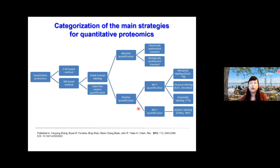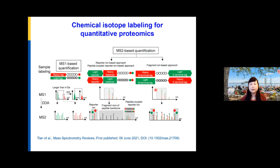Within mass spec-based approaches, there are label-free relative quantification and stable isotope labeling strategies, which can be further divided into absolute and relative quantification. We can also divide these into MS1-based quantification and MS2-based quantification. A recent review from Mass Spectrometry Reviews summarized these chemical isotope labeling strategies, ranging from MS1-based approaches using light and heavy isotope tags with extracted ion chromatograms, to MS2-based quantification strategies including reporter ion-based and fragment ion-based approaches.